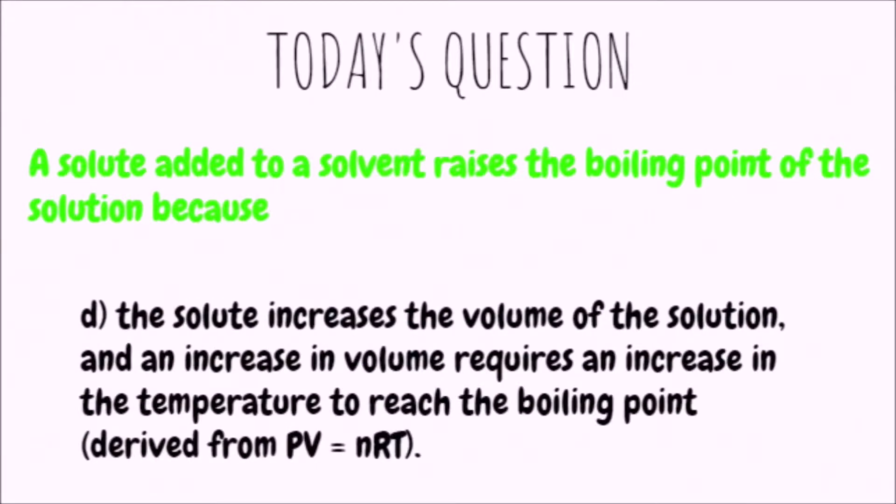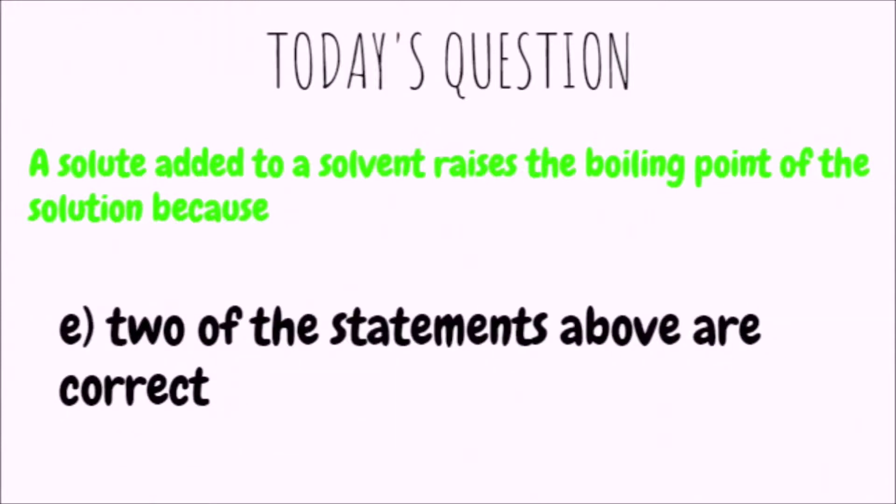The solute increases the volume of the solution. And an increase in volume requires an increase in the temperature to reach the boiling point. Derived from PV equals NRT. Or E. Two of the statements above are correct.